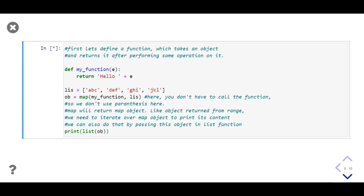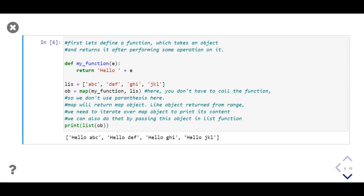In this example we have a list of string objects stored in variable `names_list`. We need to add the prefix 'hello' to each string element. First we define a function which takes a single string and returns it with the prefix 'hello' added. Then we use `map` to apply our custom function on each element in the list. We save the map object in variable `ob`, pass it into the `list` function, and print the elements. In the output we get a list of the same strings but with 'hello' added as a prefix to each element.